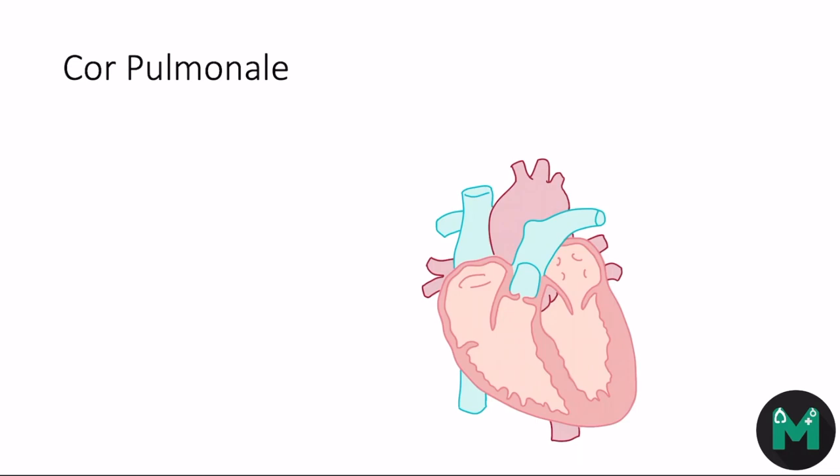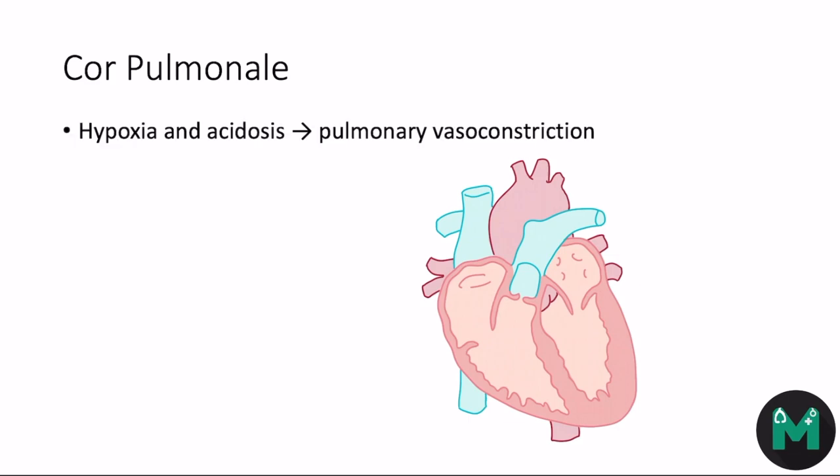Cor pulmonale is a condition that results from the hypoxia we just discussed. Blood from the body enters the right side of the heart via the vena cava and leaves to the lungs via the pulmonary artery. Hypoxia and acidosis cause vasoconstriction and loss of pulmonary vascular tissue.